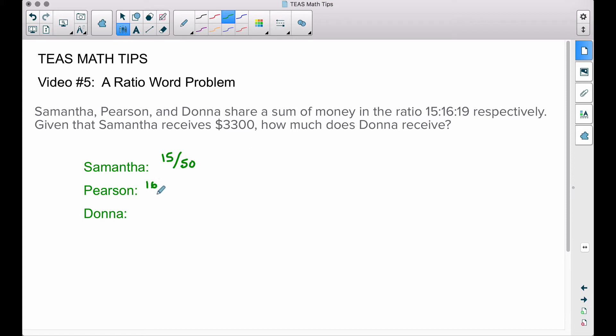Pearson's going to get 16/50 of the entire amount of money, and Donna's going to get 19/50 of the entire amount of money. If we add up all three of these fractions, we have the whole amount of money.